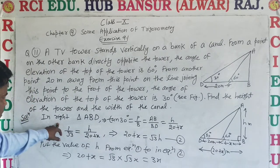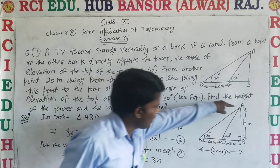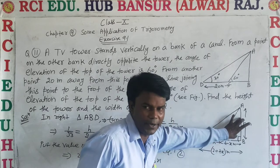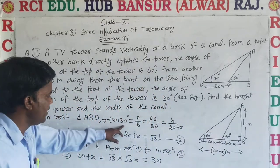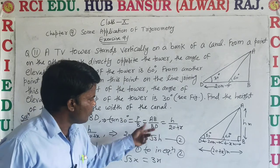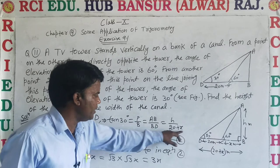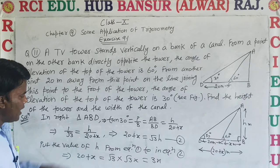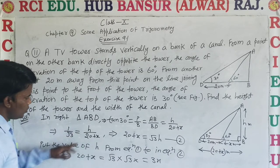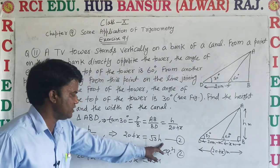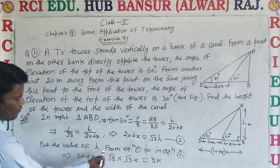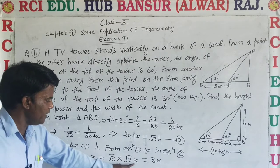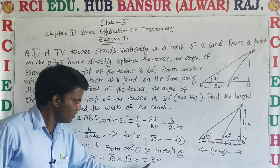Now in right triangle ABD, angle is 30 degrees, height H, and total base is 20 plus X. Tan 30 degrees equals perpendicular upon base, AB upon BD equals H upon 20 plus X. Put the value of tan 30 degree, 1 upon root 3 equals H upon 20 plus X. Doing cross multiplication, 20 plus X equals root 3H. This is equation 2. Put the value of H from equation 1 into equation 2: 20 plus X equals root 3 into root 3X, which equals 3X.